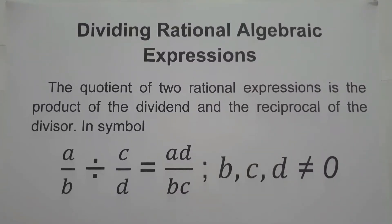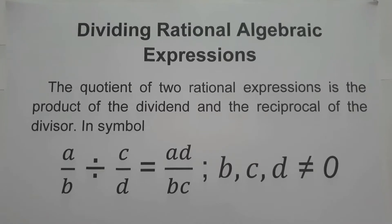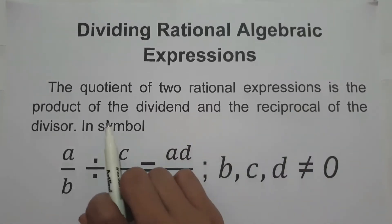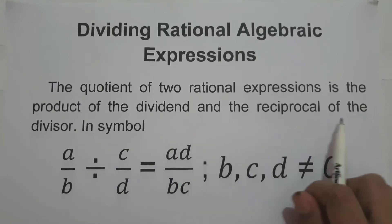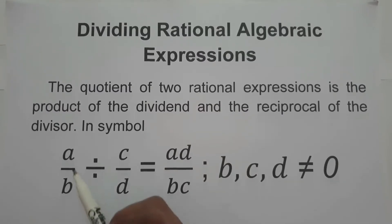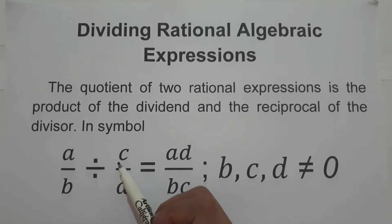For today's video, we are going to talk about how to divide rational algebraic expressions. When we say dividing rational algebraic expressions, the quotient of the rational expression is the product of the dividend and the reciprocal of the divisor. So in short, whenever we divide rational algebraic expressions, we simply multiply numerator to denominator and denominator to numerator.